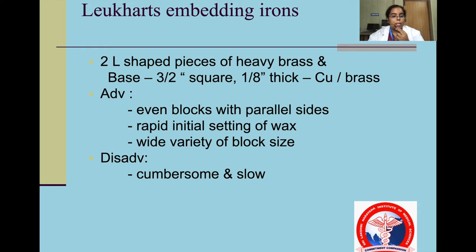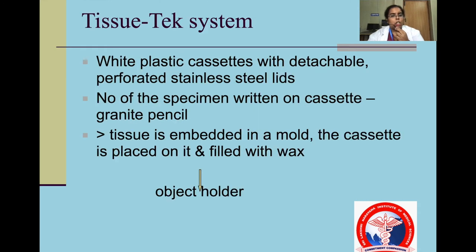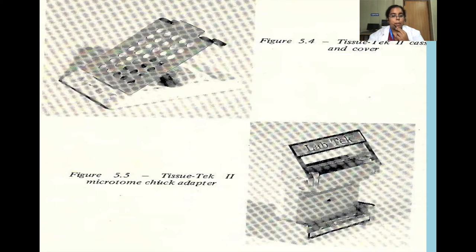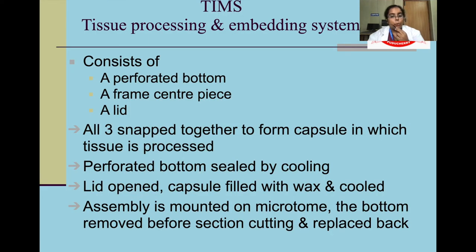The tissue tech system is a white plastic cassette with detachable perforated stainless steel lids, with the advantage that increased tissue can be placed and filled with wax. The tissue processing and embedding system consists of a perforated bottom, a frame centerpiece and a lid; all three snap together to form a capsule. This is easier to use and very commonly used.